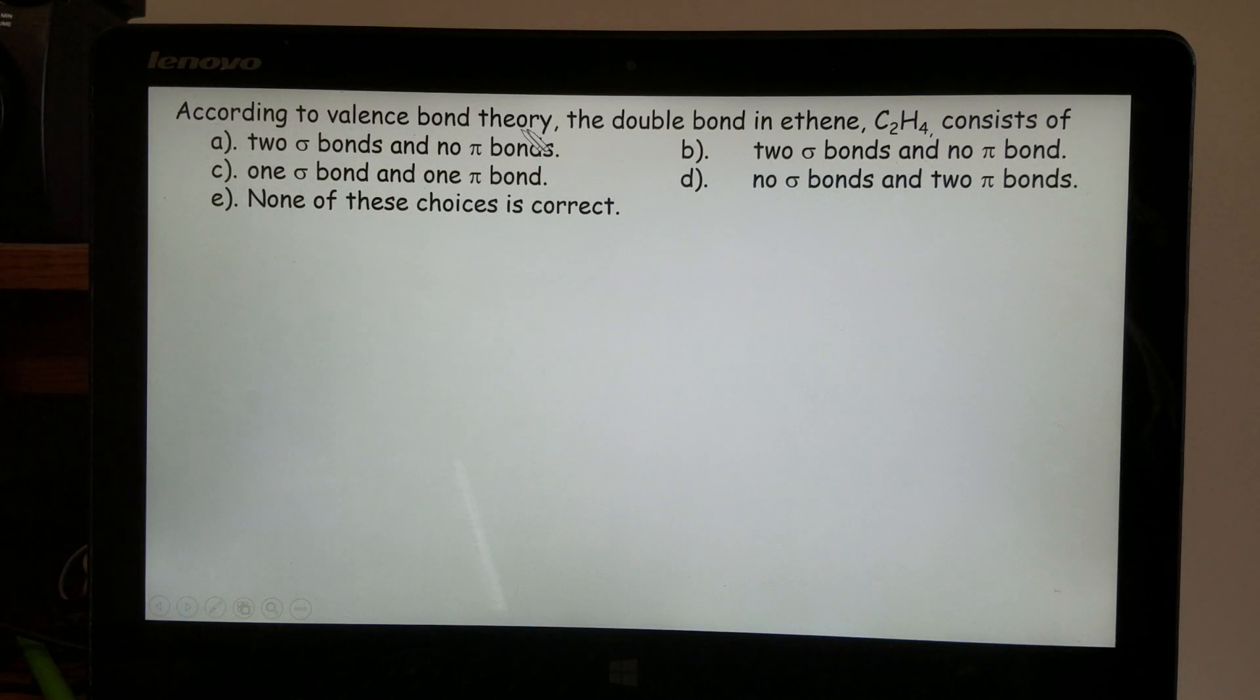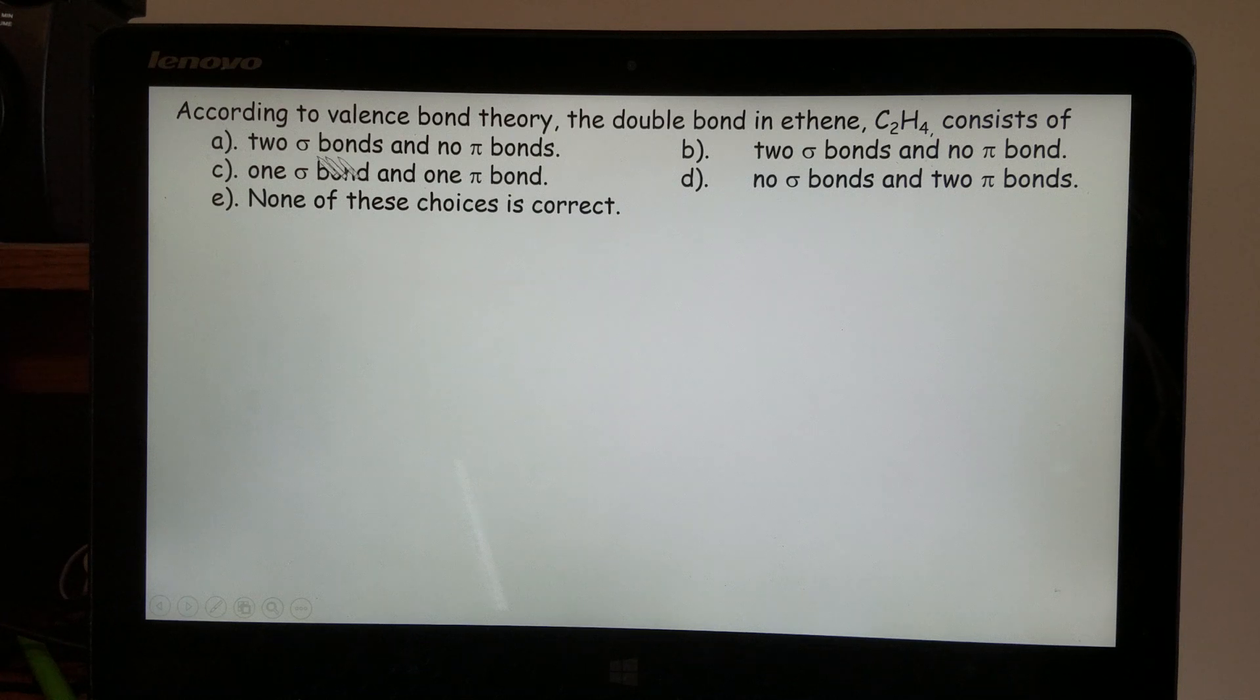According to valence bond theory, the double bond in ethene, C2H4, consists of how many sigma bonds and how many pi bonds?